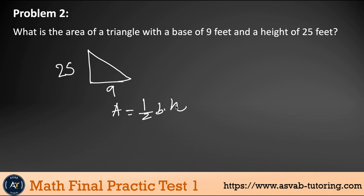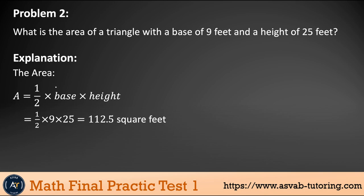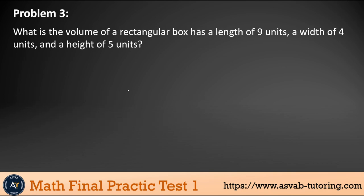So the area equal one half base time height. Let's see how we did this problem. So here you could see here exactly what I did previous slide, half time base time height. So one half times nine times 25. So 25 times nine and then divided by two, that gives you 112.5 square feet. So that is the correct answer.